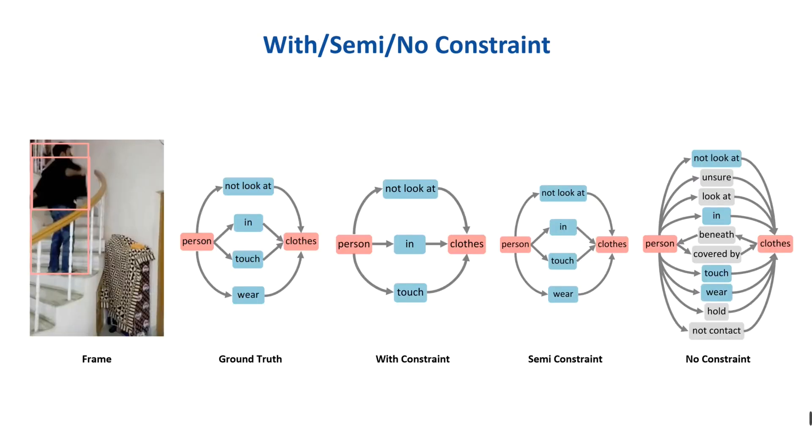There are two typical strategies to generate a scene graph with the inferred relation distribution in previous works: with constraint and no constraint. With constraint only allows each subject-object pair to have at most one predicate, where no constraint allows multiple guesses.